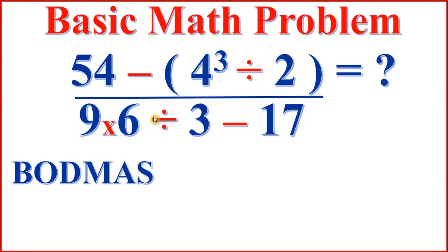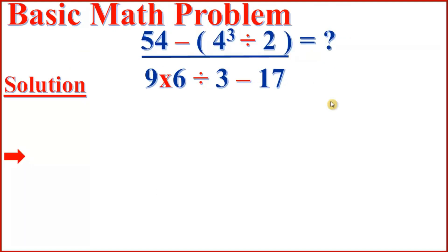We have all different sorts of mathematical operations going on here — subtraction, power, division, multiplication, division again, subtraction again, and a fraction bar which is like division. What do we do? What is the order to do this problem? Because if we do this in various different orders we are going to get various different answers. BODMAS tells us the exact order to do a math problem.